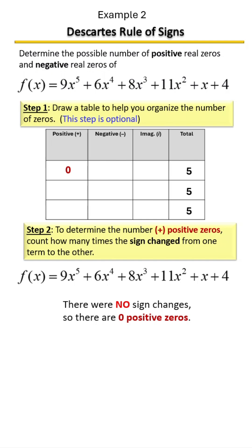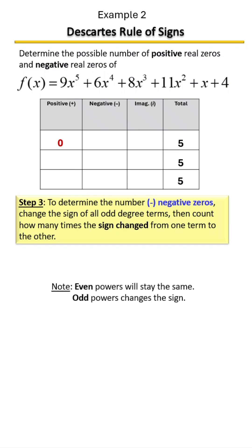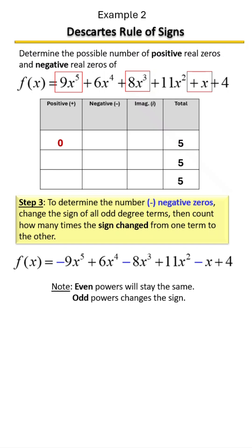Now let's find out how many possible negative zeros. To determine the number of negative zeros, simply change the sign of all odd degree terms, then count how many times the sign changed from one term to the other. Let's see how many odd degree terms we have — we have three odd degree terms. We're going to go ahead and change their signs.